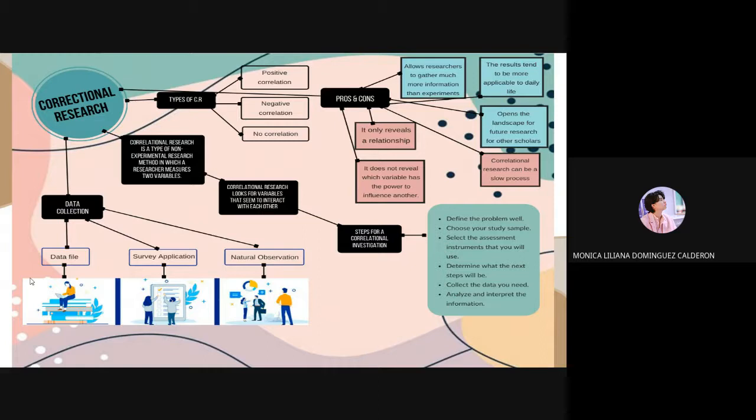Moving on to data collection. This consists in the data files. That is another approach to correlational research data is the use of data files. These files are the ones that contain data that has been previously collected by doing similar research.